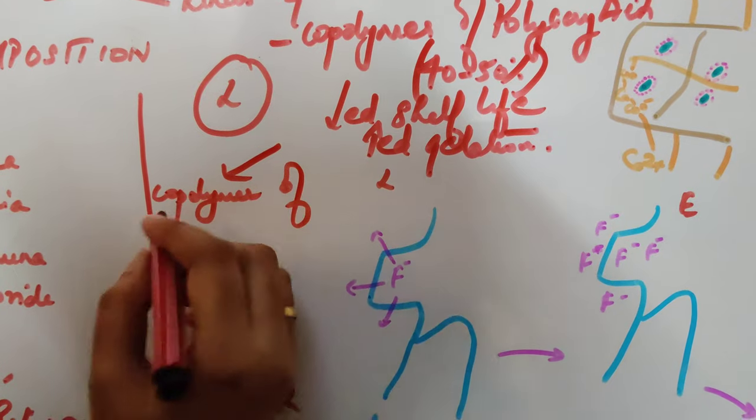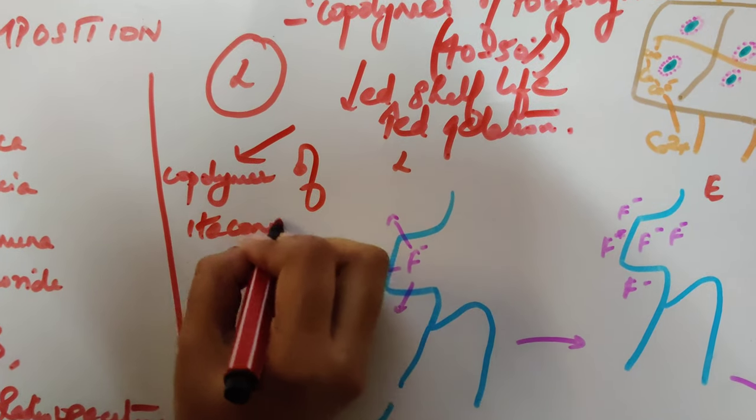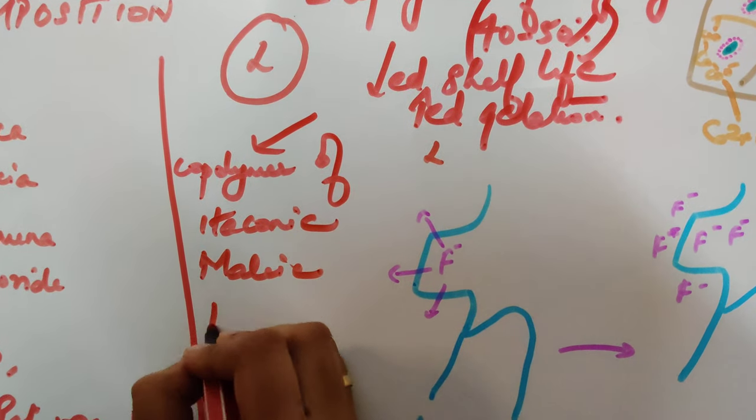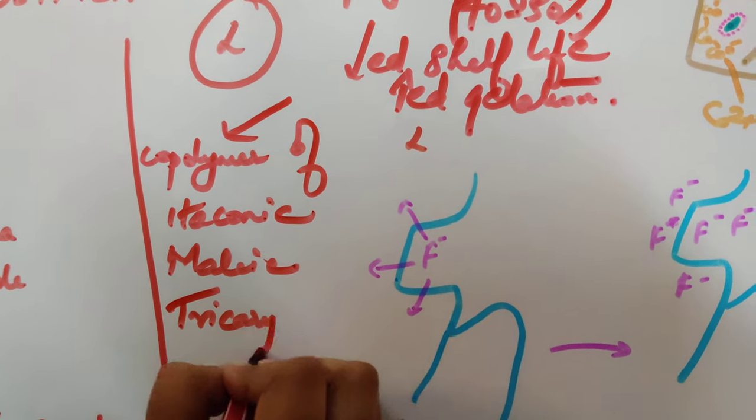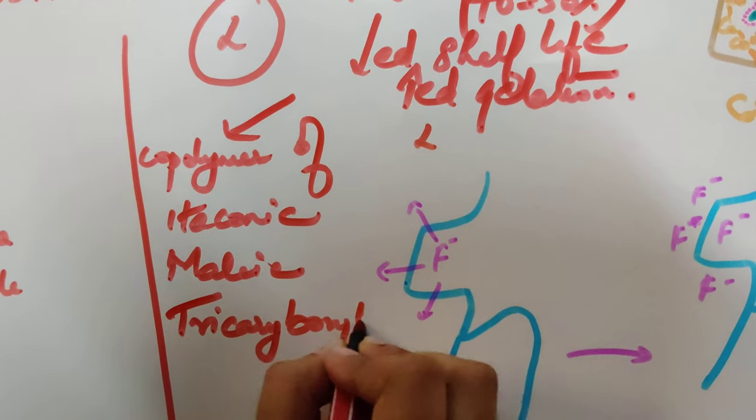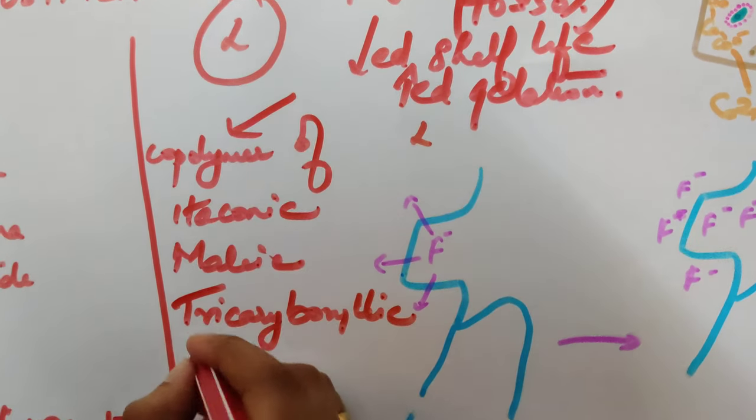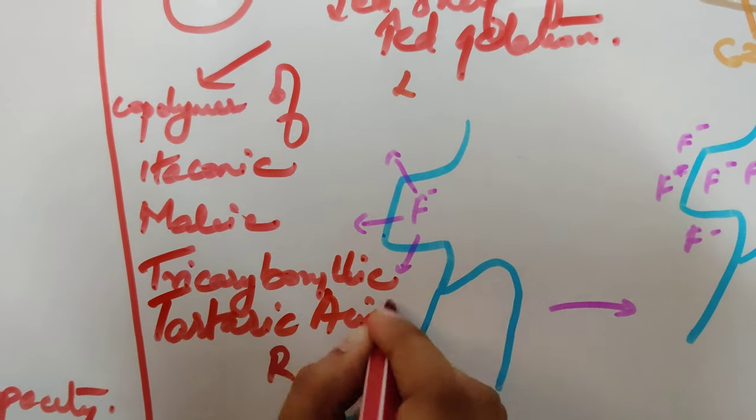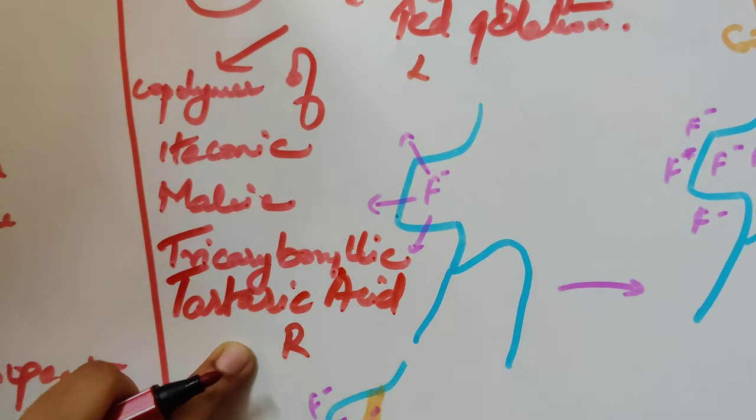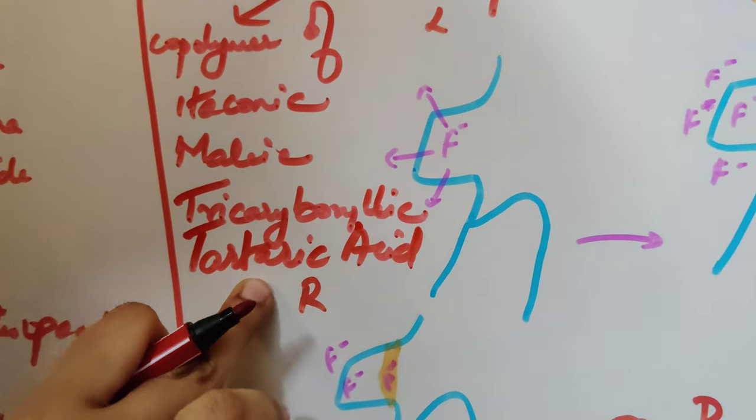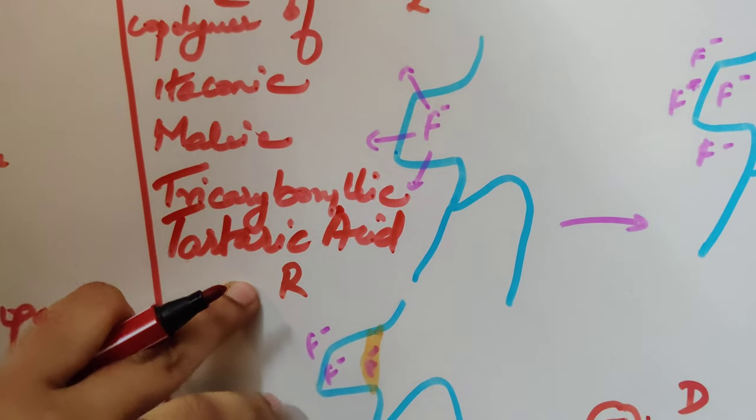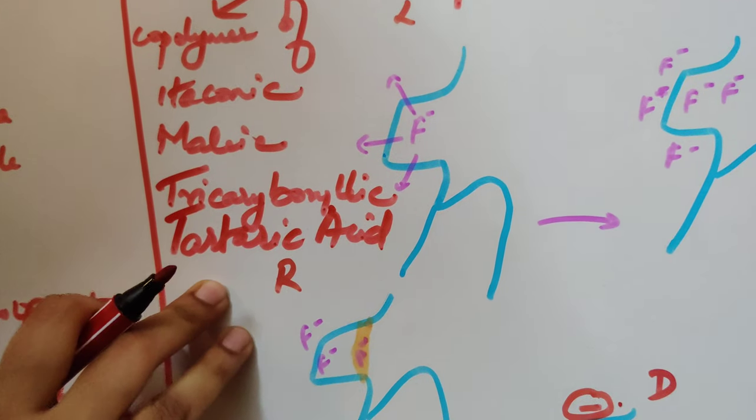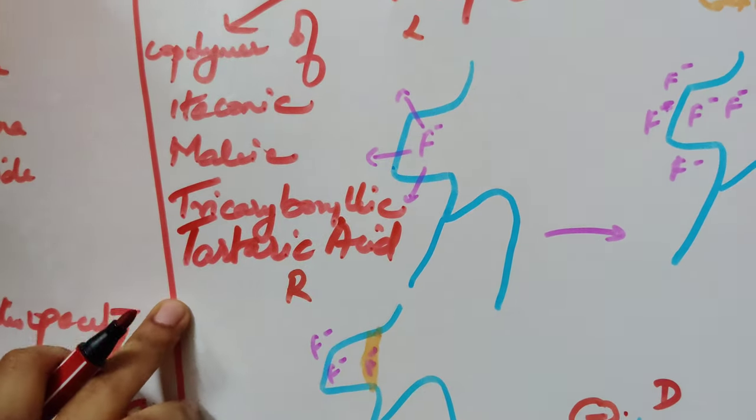Copolymer of itaconic acid, maleic acid, or any other tricarboxylic acid was being used. Also, most important being the tartaric acid, as this is called a rate controlling additive because this is going to lengthen your shelf life and decrease the gelation property.